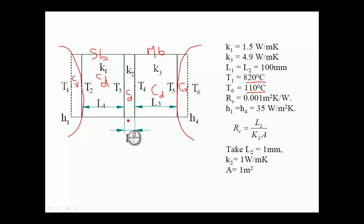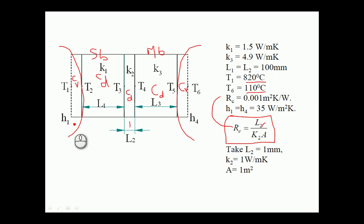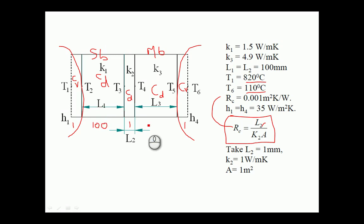We need to find the equivalent length for the contact resistance. Using the relation with thermal conductivity k2 equal to 1 watt per meter Kelvin, and the given contact resistance, the value of l2 is found to be 1 mm. The geometry is: 1 mm convection element, 100 mm silica brick, 1 mm contact resistance, 100 mm magnesia brick, and 1 mm convection element.